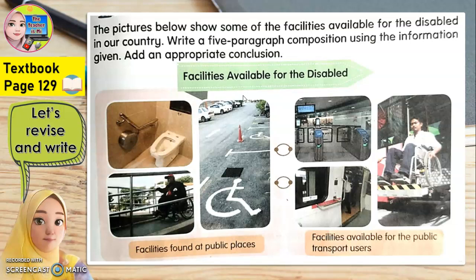Let's look at these pictures. The title is facilities available for the disabled — kemudahan yang disediakan untuk orang-orang kurang upaya. So now let's look at the pictures. The first group here is for the facilities found at public places — kemudahan yang dijumpai di kawasan awam. We have here in the toilet, at the parking lot. Where can you find these facilities? Maybe you can find it in front of a shopping complex or in front of a clinic.